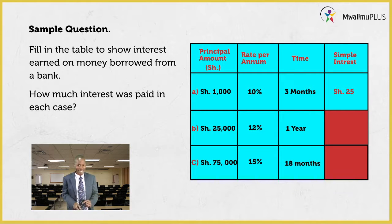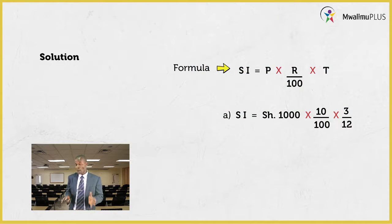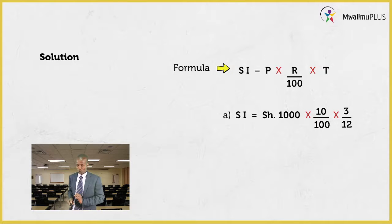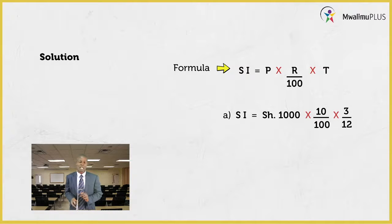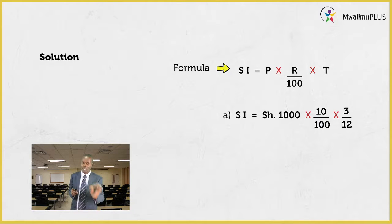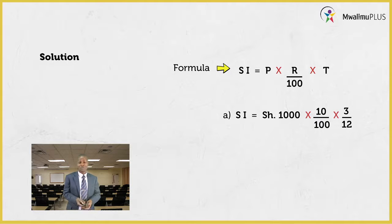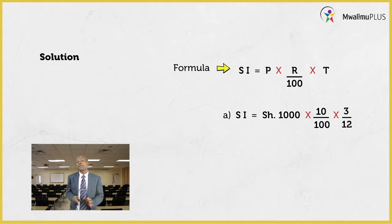Here we go. The formula is: SI = Principal × Rate/100 × Time. The time can be in months or full years. The principal amount for the first row was 1,000 shillings at a rate of 10% per annum, and this money stayed in the bank for three months. Now, I want to pause on the time — three months is not a full year, it is just a fraction of the year.